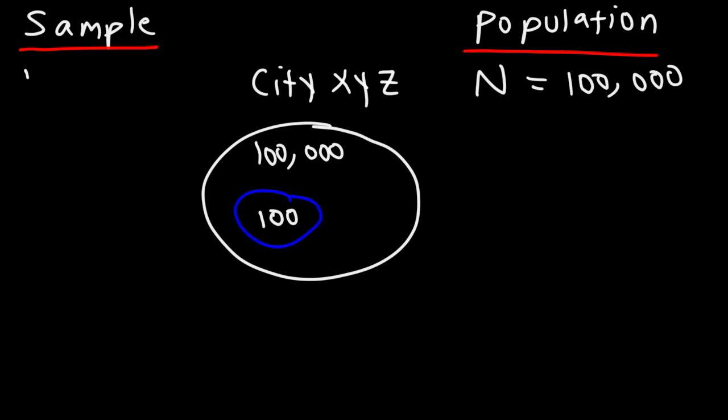And so the sample size, represented by lowercase n, as opposed to capital N, is 100. And so that's the difference. A sample is what it is. It's a sample of the population, a small portion of it.